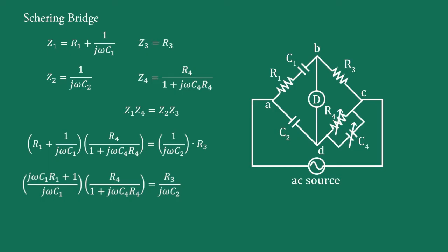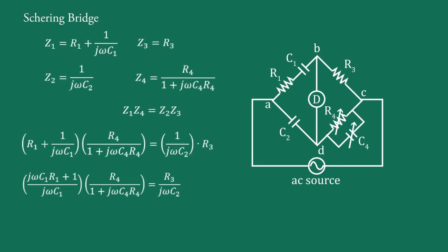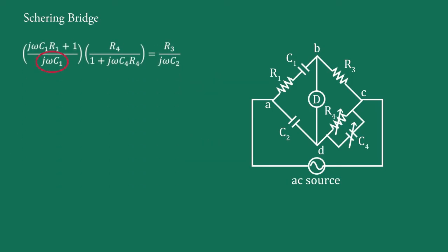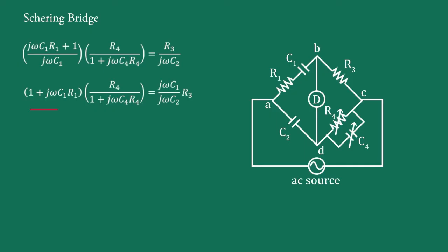After multiplying both sides by jωC1, we get (1 + jωC1·R1) · R4 / (1 + jωC4·R4) = (C1/C2) · R3. Transferring the denominator to the right-hand side, we obtain: R4 + jωC1·R1·R4 = (C1/C2) · R3 · (1 + jωC4·R4).